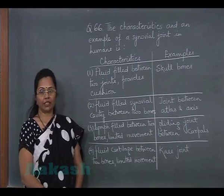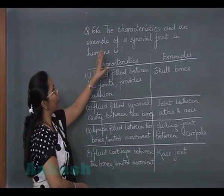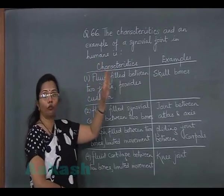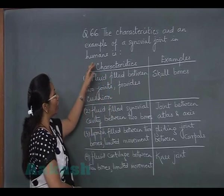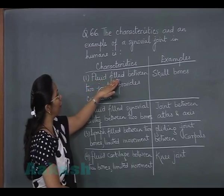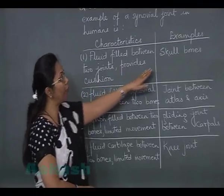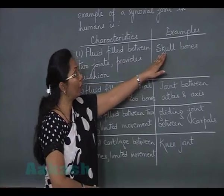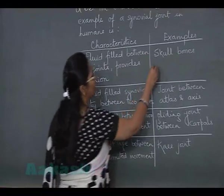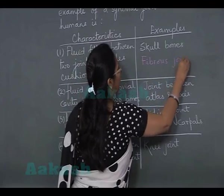Let's discuss question 66 — the characteristics and an example of a synovial joint in humans. We know that synovial joints are freely movable joints. The first option is fluid filled between two joints provides a cushion, and the example given is skull bones. The type of joint in skull bones is a fibrous joint, not a synovial joint at all, so this cannot be our answer.